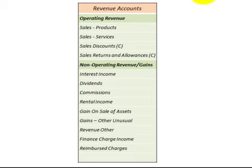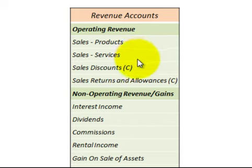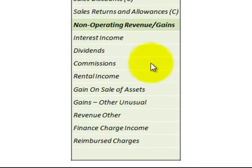Now we'll scan through the accounts for revenues, expenses, and cost of goods sold. Starting with revenues, we've broken it down by operating revenues — sales accounts — and then sales discounts, which have a little 'C' indicating they are contra accounts, meaning they work opposite to the normal account and reduce it. We also have non-operating revenue gains listed here, such as interest income and commissions.